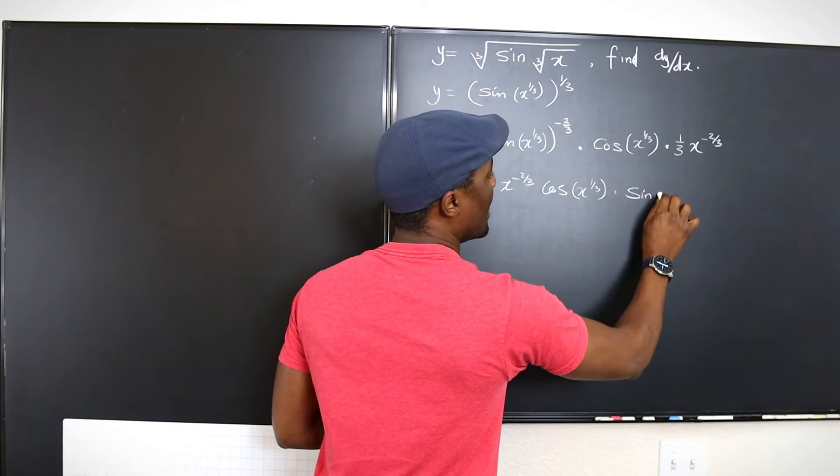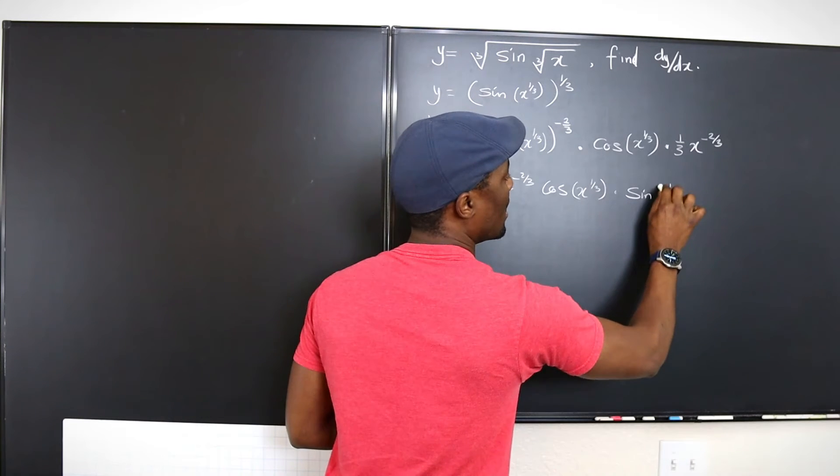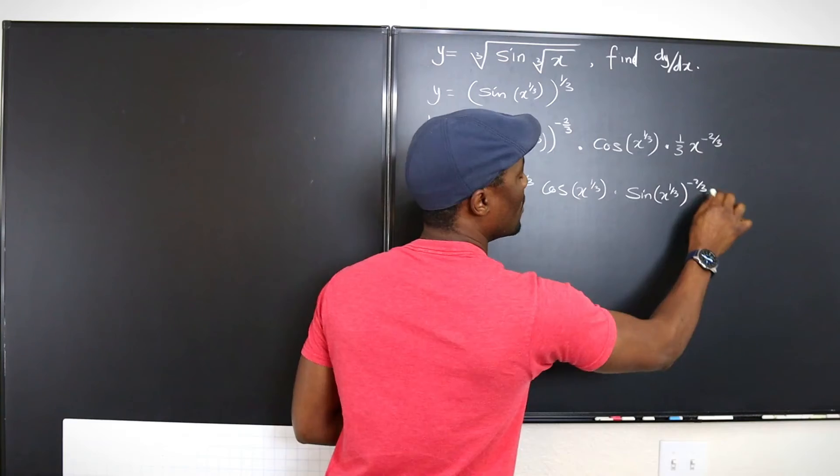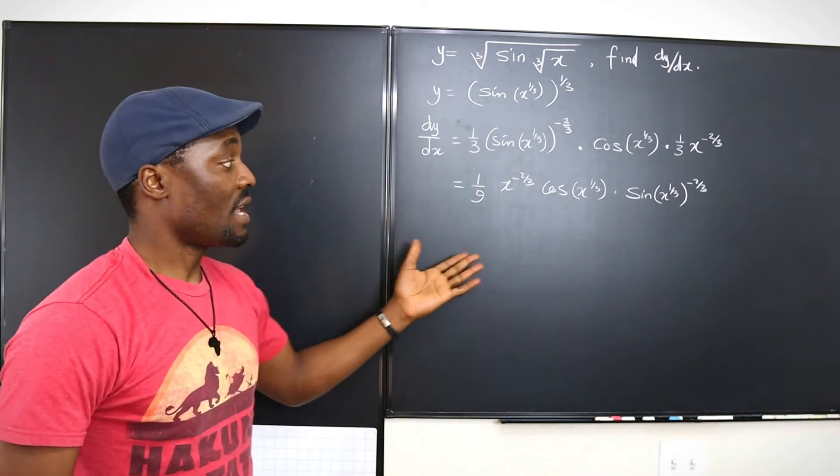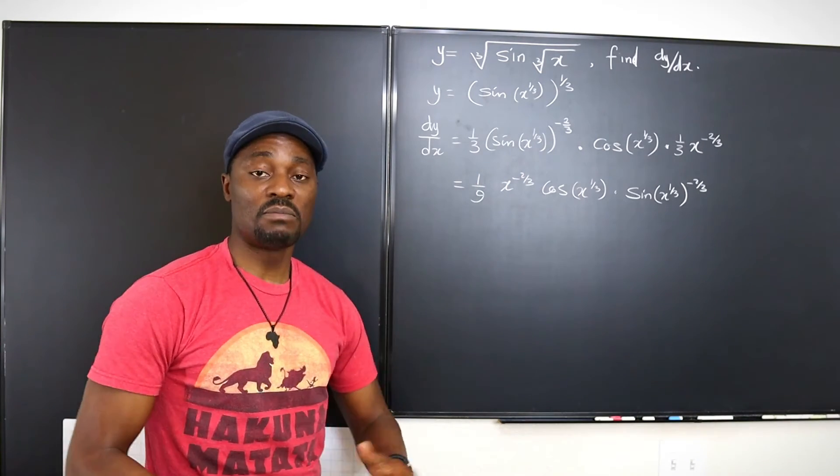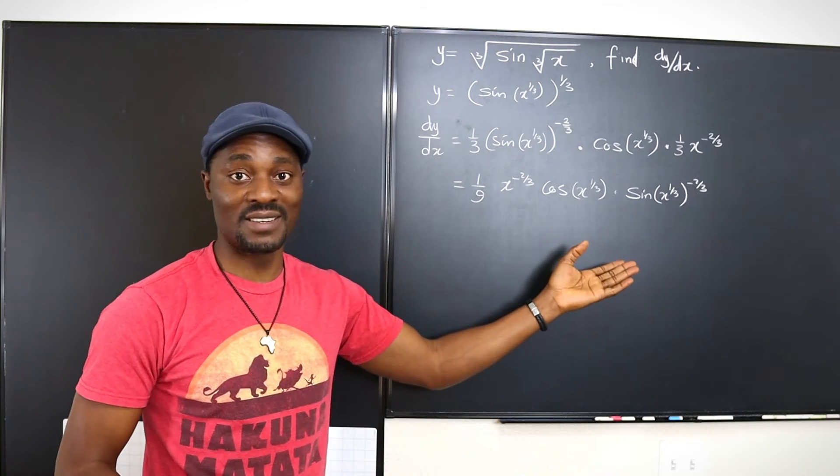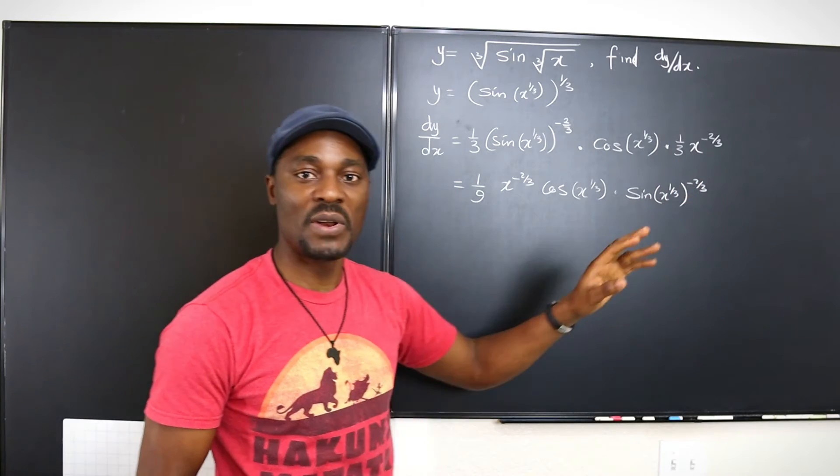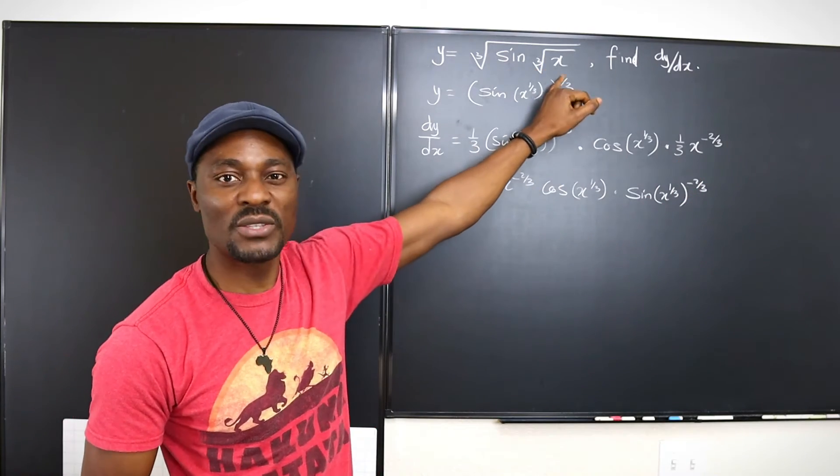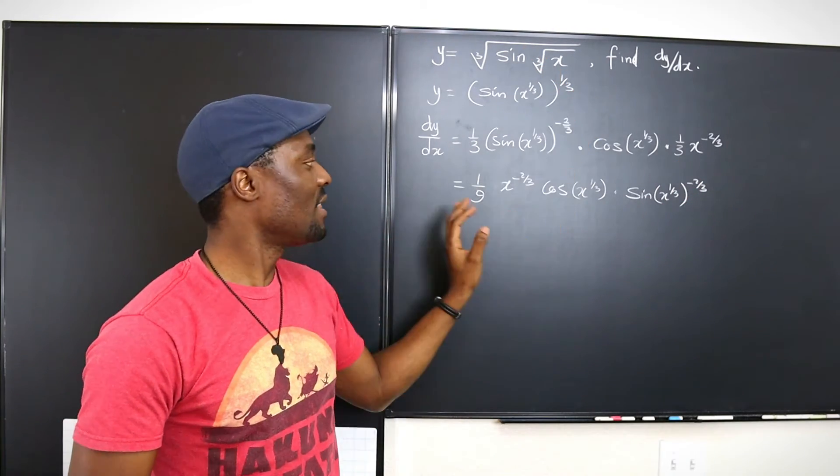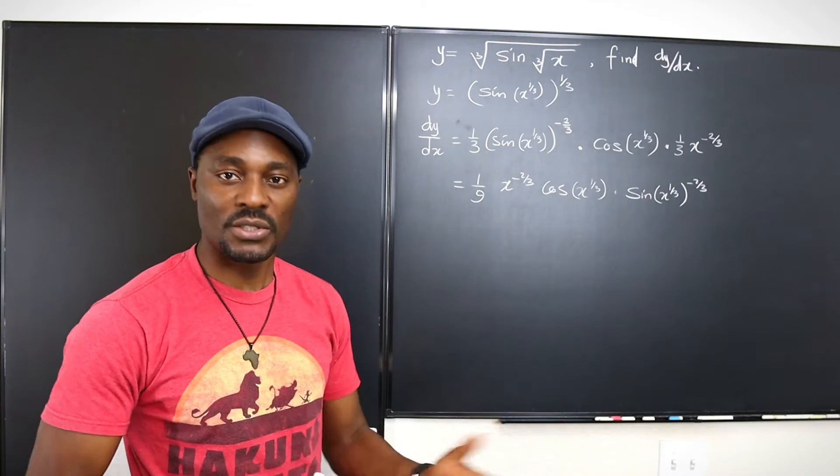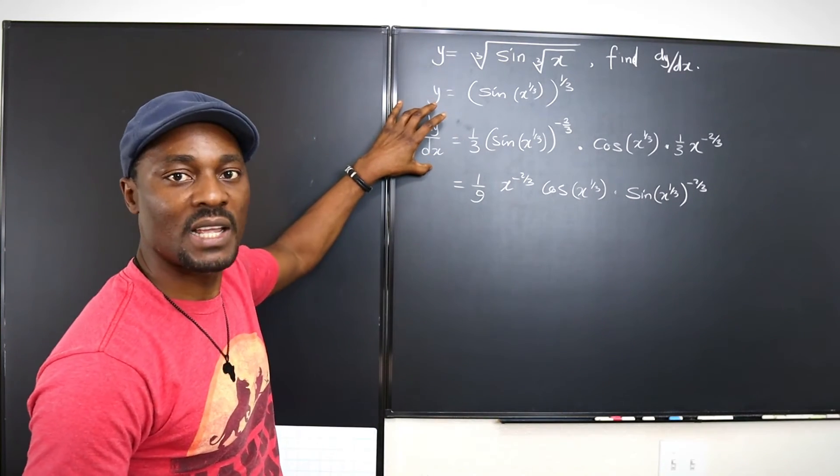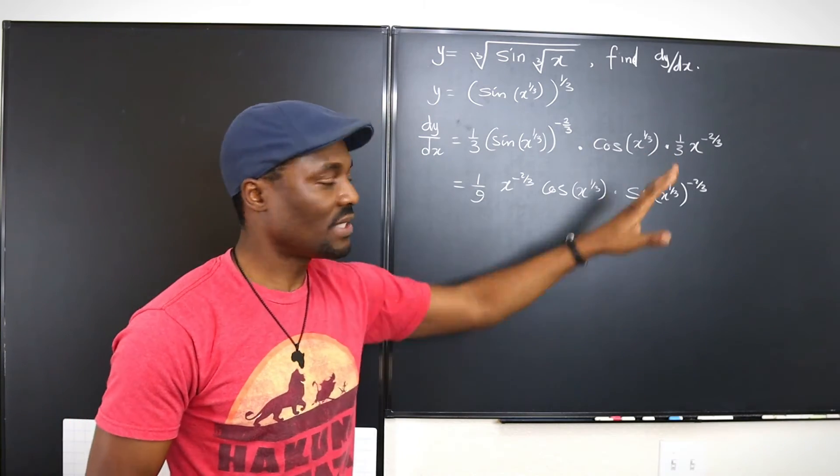It's going to be sine x to the one third multiplied by negative two over three. Well, if you're not required to clean things up, this is your answer. I know it doesn't look so clean. But if we want to get rid of all the negative exponents and rewrite it the way the question was written originally, the rest of what you're doing is just algebraic simplification. And you can do that. But once you get this first line here, you're fine. This is your answer.